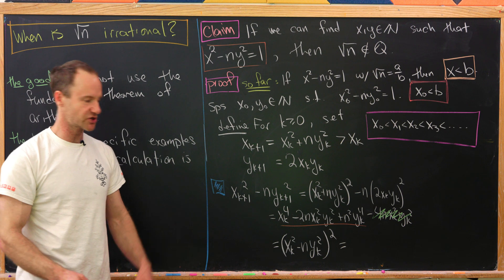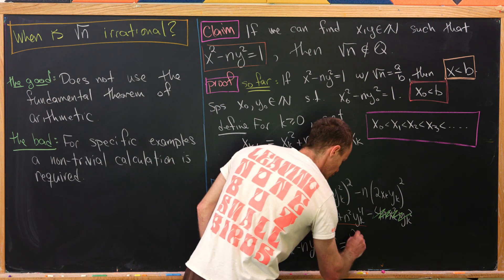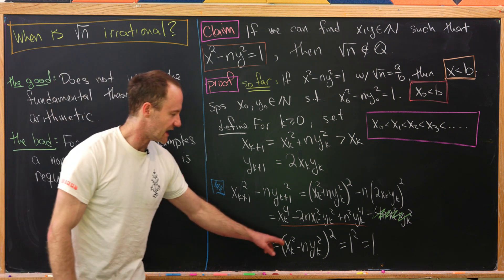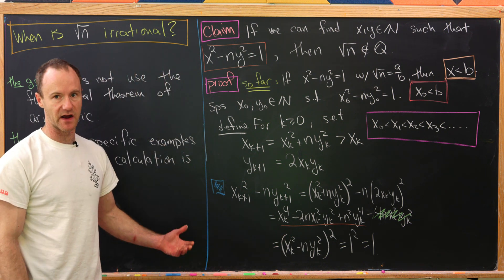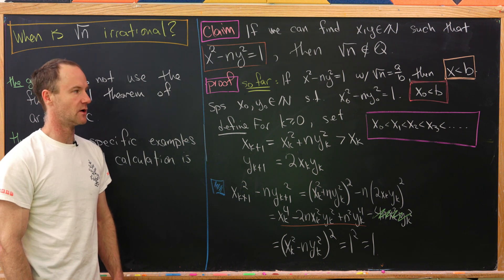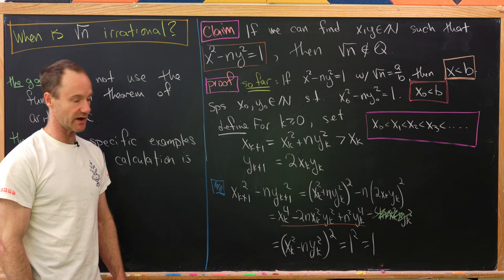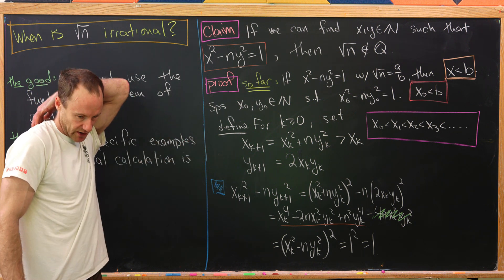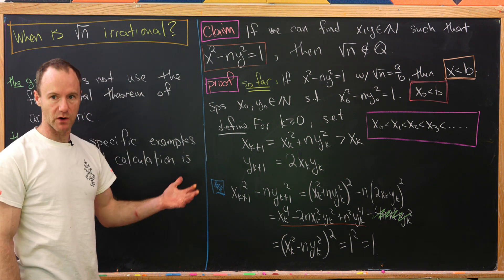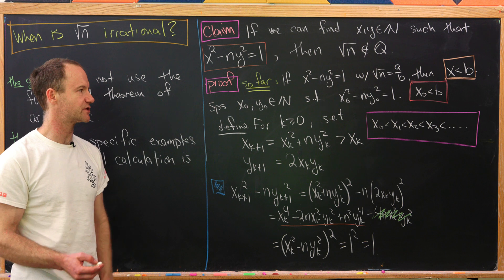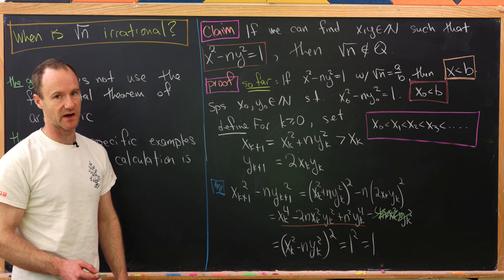If we made an induction hypothesis, that would be equal to 1 squared, which is 1. So in other words, if x sub k, y sub k satisfy our equation, then x sub k plus 1, y sub k plus 1 also satisfy our equation. But notice that x0, y0 satisfied our equation. That means x1, y1, x2, y2, x3, y3, and so on and so forth also satisfy our equation.